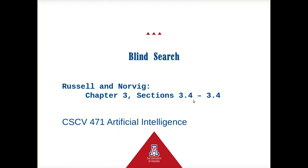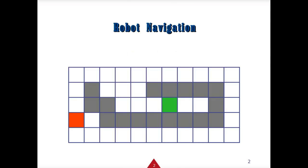Hello, this is Greg Waggoner doing an overview of Blind Search for CSCV471 Artificial Intelligence. This will cover chapter 3.4 in the Russell and Norvig textbook.